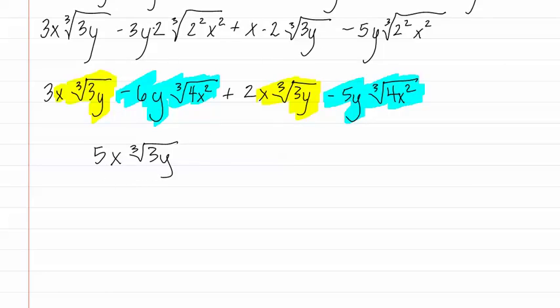Let's do the same with those highlighted in blue. Negative six and negative five become negative eleven y cubed root of four x squared. Remember, when combining like radicals, you must match variables on the outside of the radical as well as whatever is inside the radical, then simply add the numbers in the front.